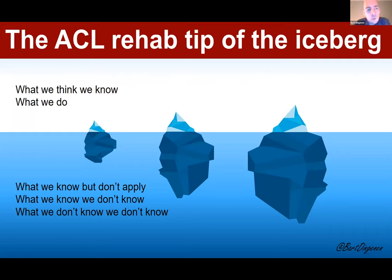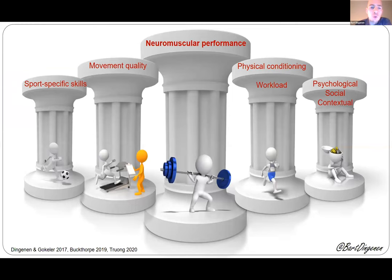I want to structure my presentation starting with the analogy of the tip of the iceberg. What I mean is that what we currently do or think we know has improved over the last couple of years, but there are still so many things we don't yet apply in clinical practice — things we know we don't know, but also things we don't know we don't know, which may become clearer in the next few years. To structure a rehab process, it's good to make a distinction between factors that need to be trained or tested. Based on current literature, I propose five pillars.